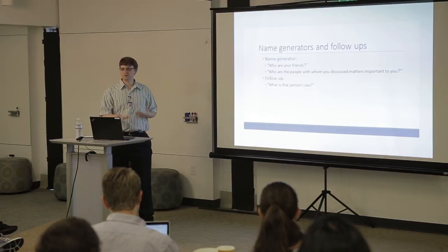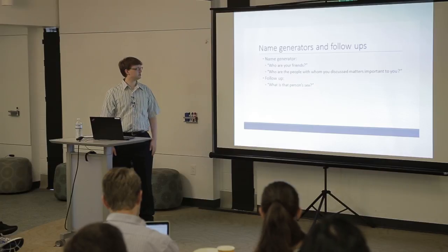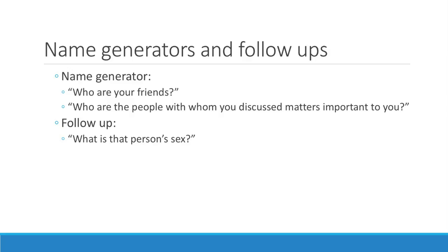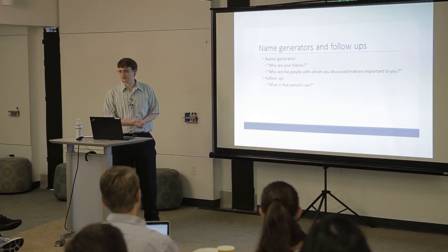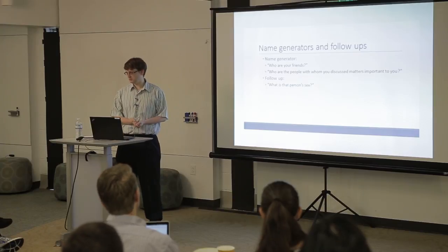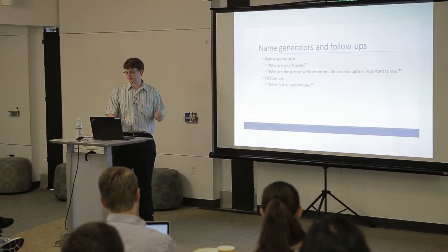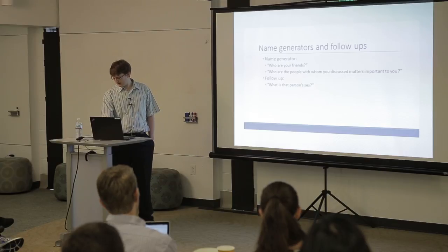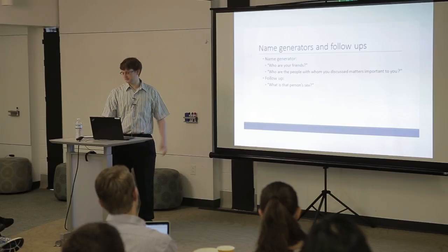In an ego network, you use some sort of name generator when surveying them to ask who are the people you talk to, who are your friends. And you'll ask follow-up questions like what's their gender, what sort of sports do they do, what sort of things do you do together. That's how you get information about the alters — you're simply asking ego.